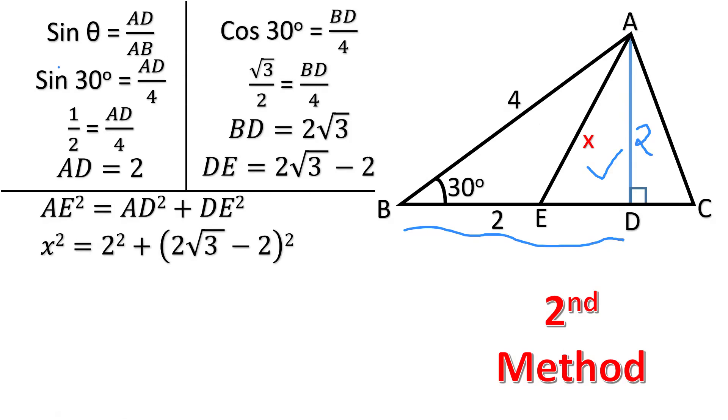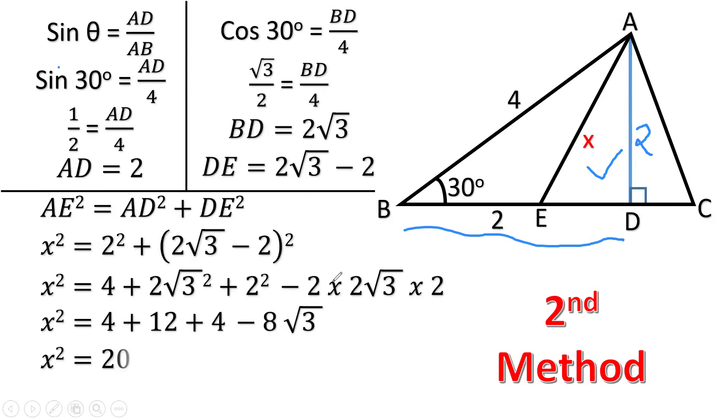AE is X square, AD is 2, and DE is 2 root 3 minus 2 square. Applying the formula A minus B whole square, we are getting this. Finally, we are getting X square equals 20 minus 8 root 3.